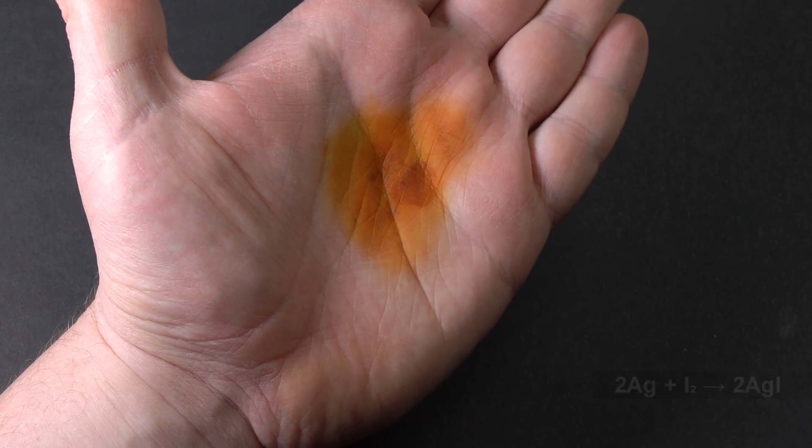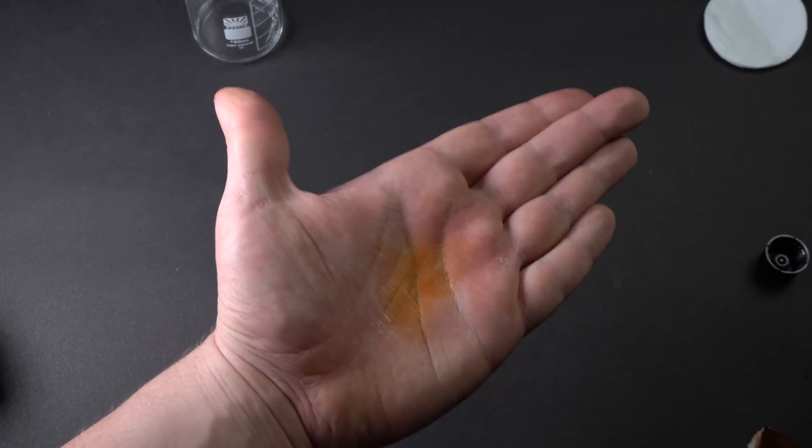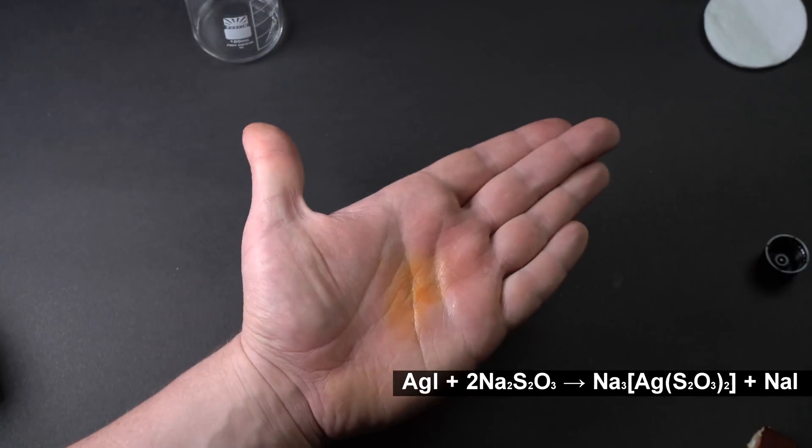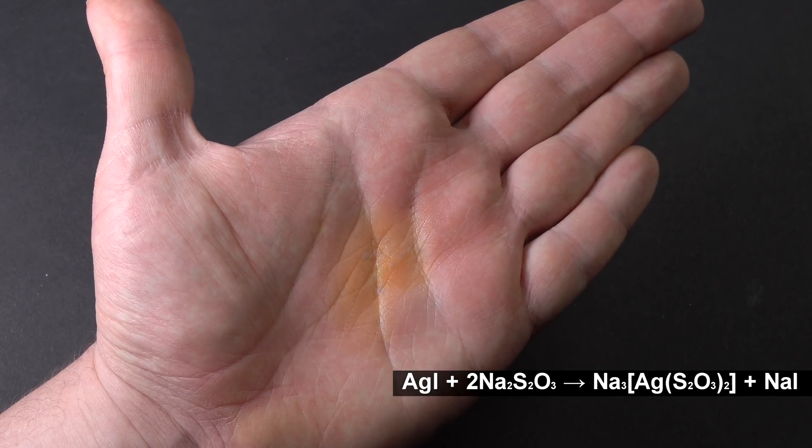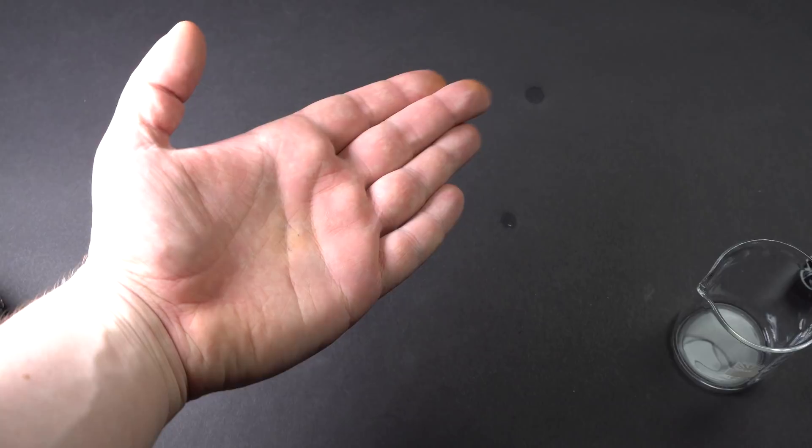Leftover iodine and silver iodide can easily be removed with concentrated sodium thiosulfate solution. I'm applying it with a cotton pad. Also, a couple of minutes later, all stains quickly disappeared.